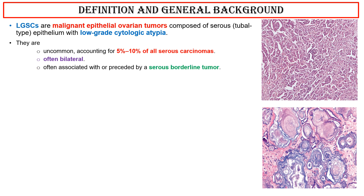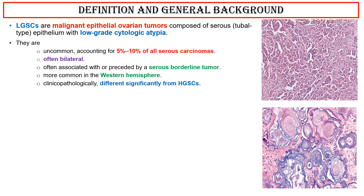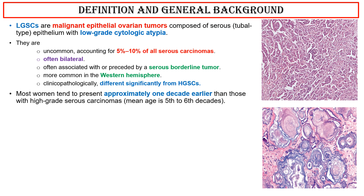They are often associated with or preceded by a serous borderline tumor, more common in the western hemisphere, and clinicopathologically different significantly from high-grade serous carcinomas. Most women tend to present approximately one decade earlier than those with high-grade serous carcinomas. Mean age is the 5th to 6th decade. Most are at advanced stage, stage 3 or higher.